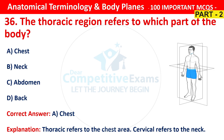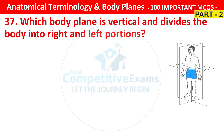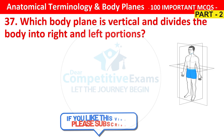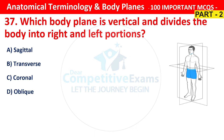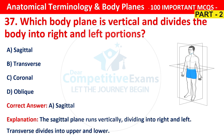Question number 37. Which body plane is vertical and divides the body into right and left portions? Your options are sagittal, transverse, coronal or oblique. The right answer is sagittal. The sagittal plane runs vertically, dividing the body into right and left. The transverse plane divides into upper and lower.